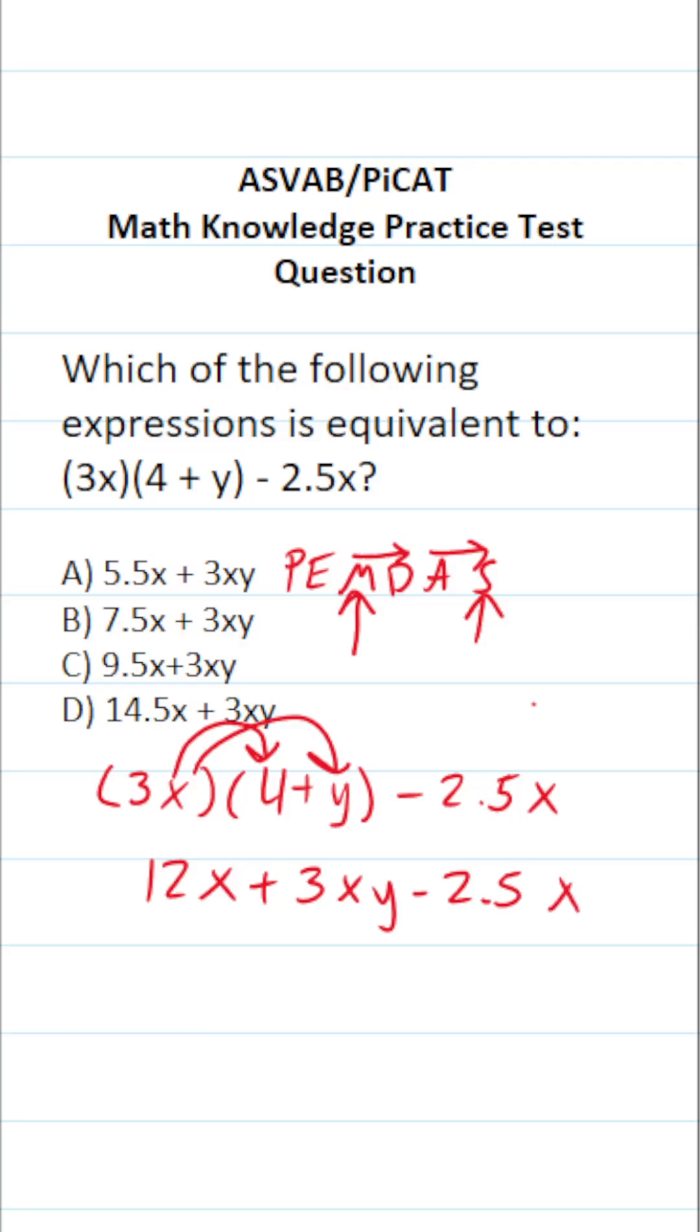Now this isn't an answer choice because we can simplify this expression further by combining like terms. Again, 12x and negative 2.5x are like terms. 12x minus 2.5x is going to be 9.5x plus 3xy. So this one is C.